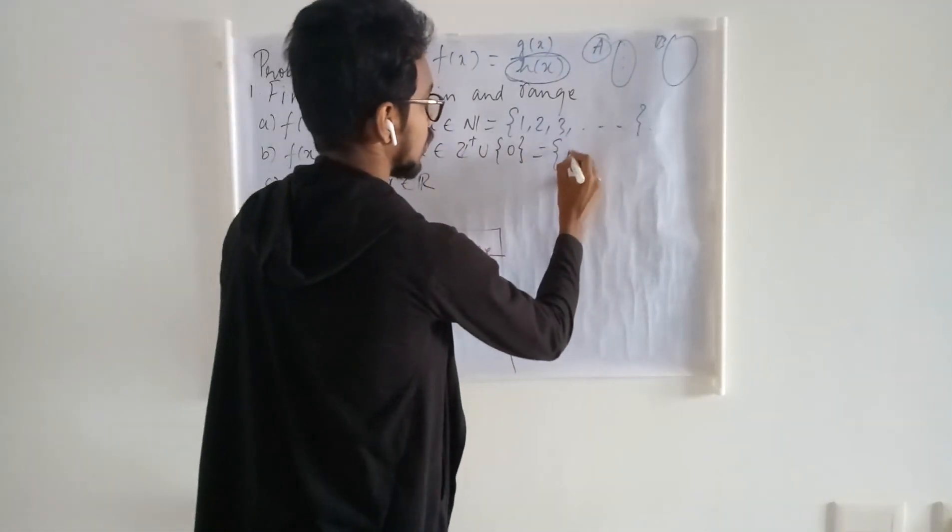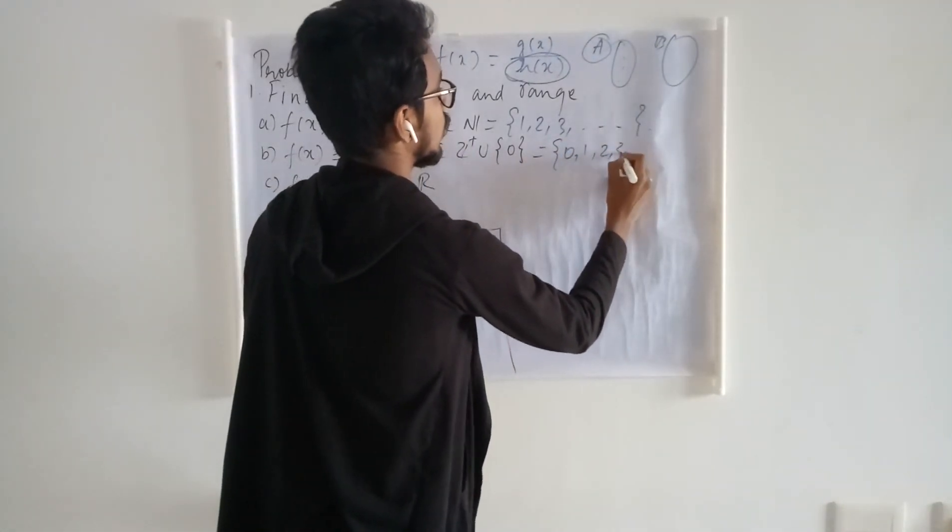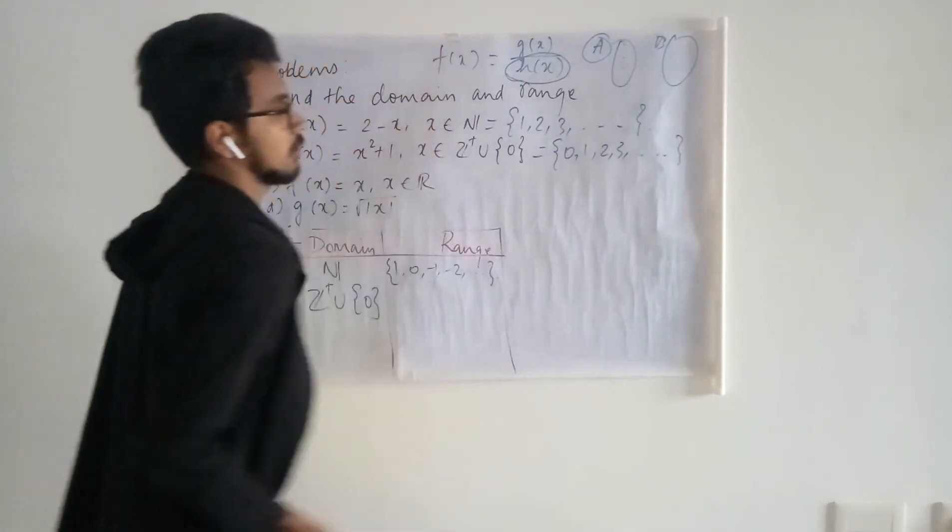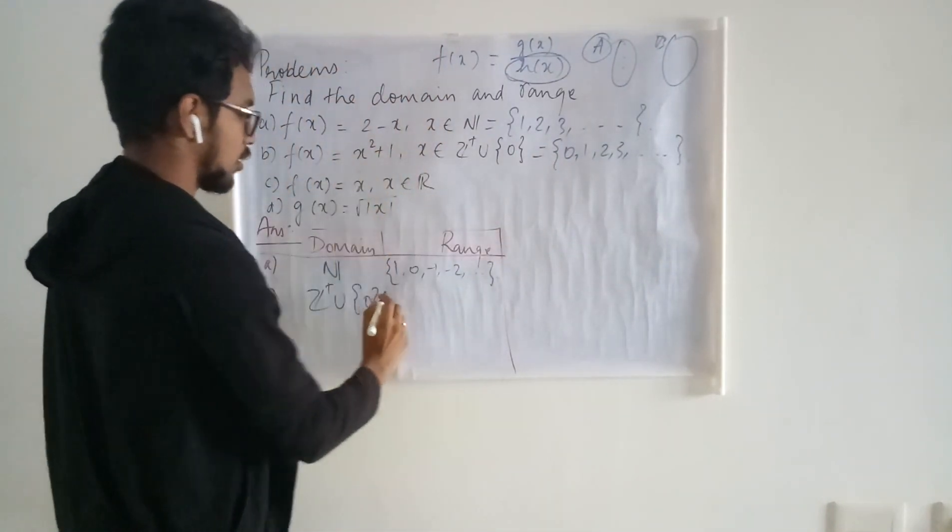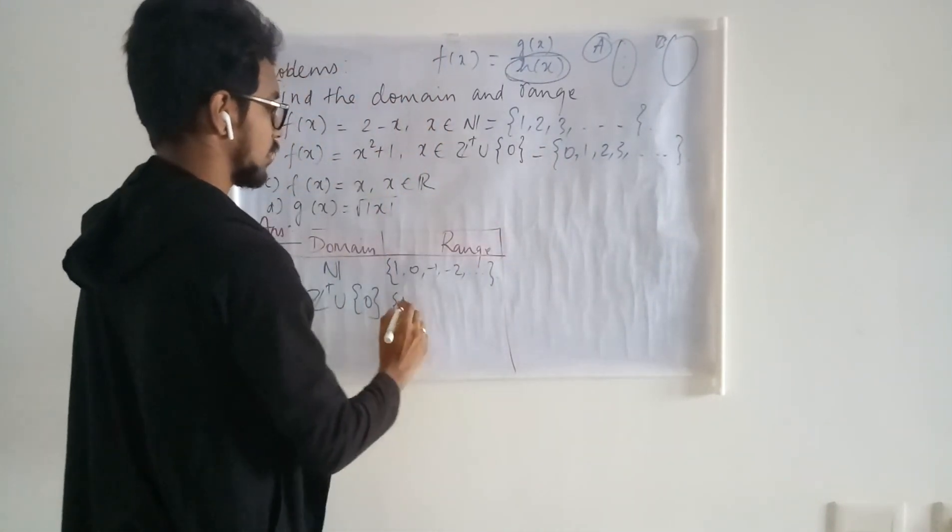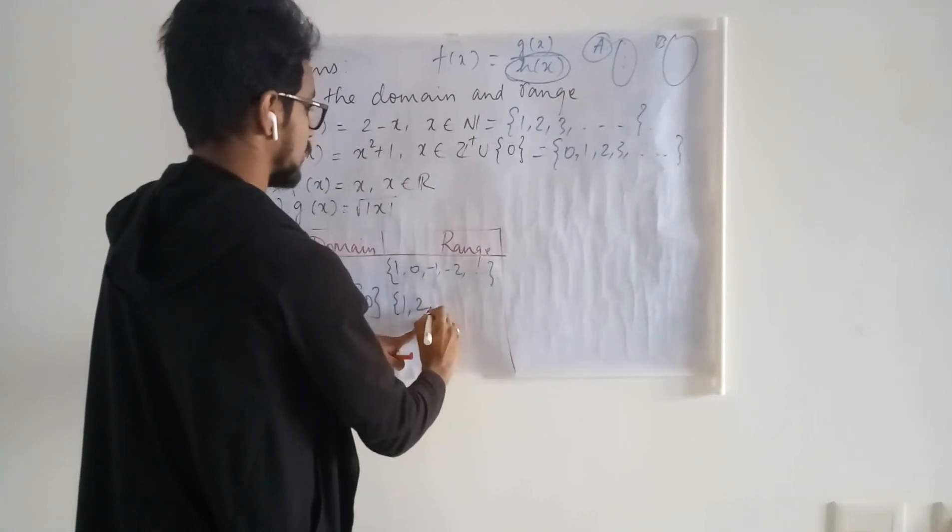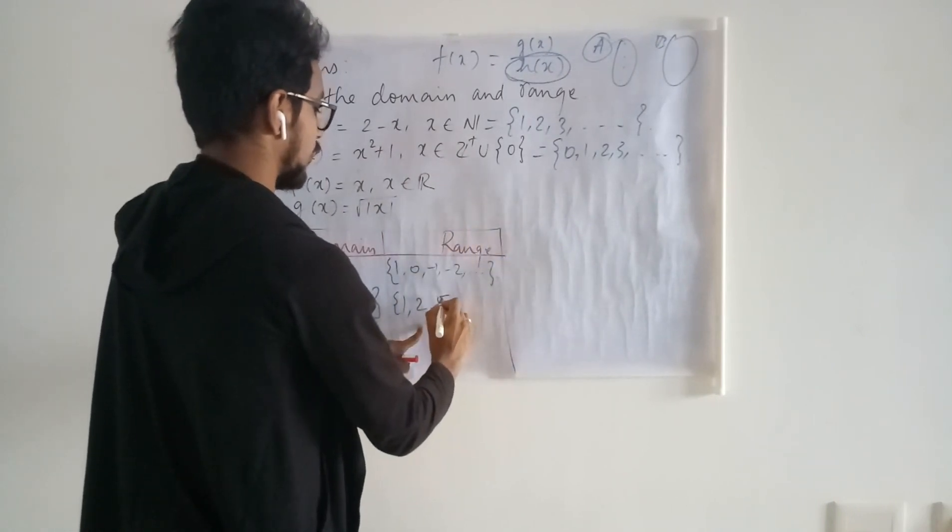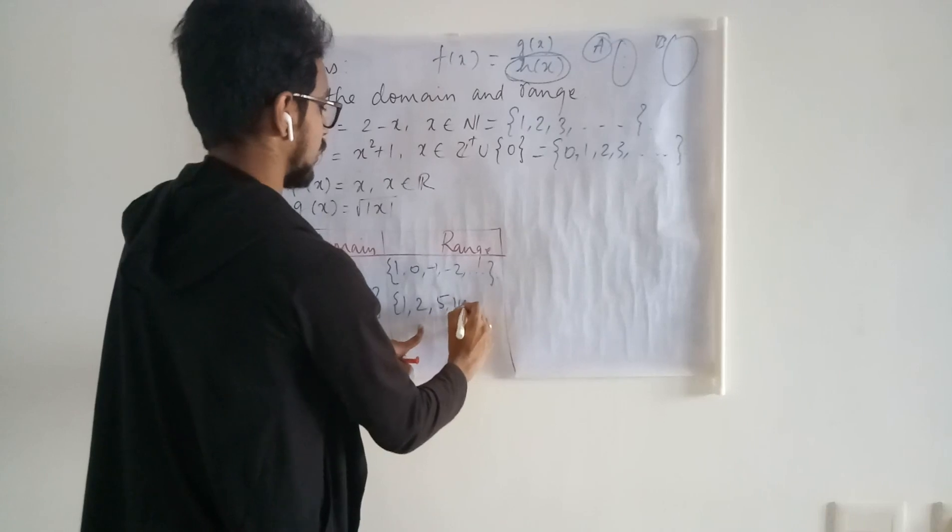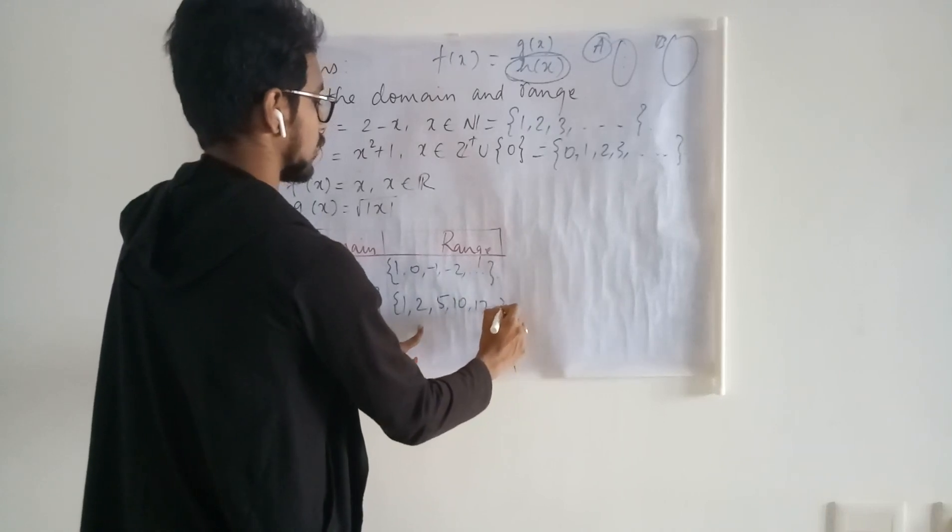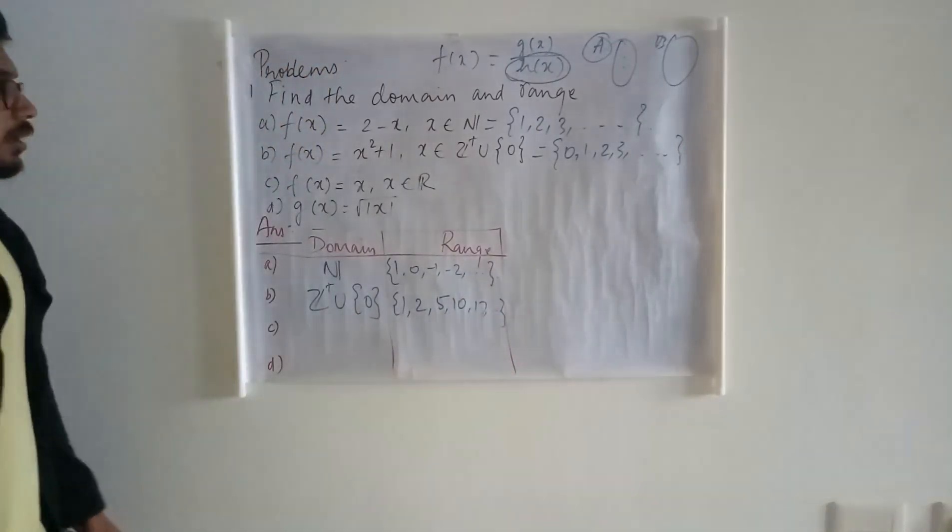Here, the set consists of the points 0, 1, 2, 3 and it goes on like this. When you substitute 0, I will have 1. When you substitute 1, I will have 2. When you substitute 2, I will have 5. When you substitute 3, I will have 10, then 17 and it goes on like this.